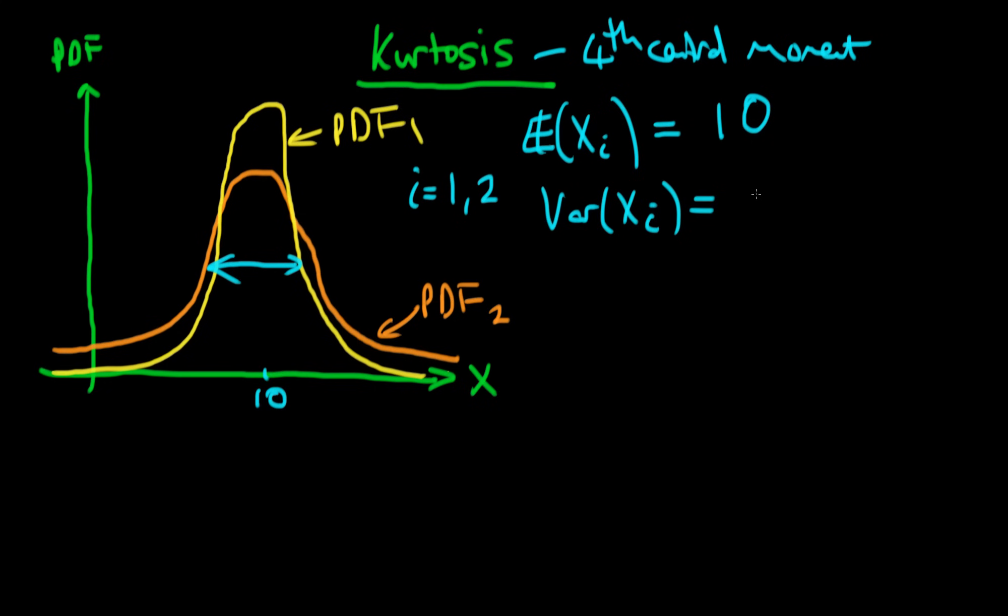So on the basis of just these first two centered moments, or the first one not being a centered moment, rather the second one being a centered moment, we wouldn't actually be able to tell these two distributions apart.